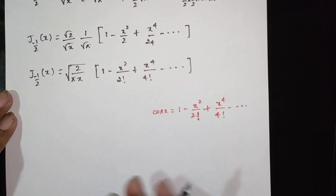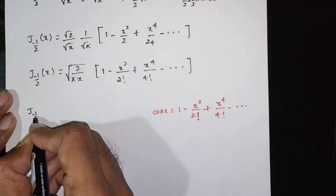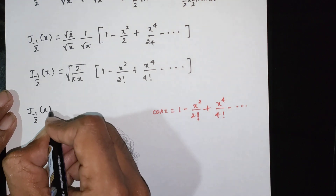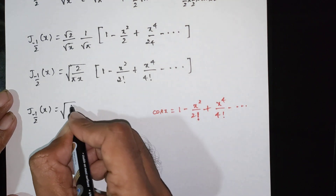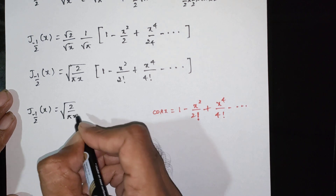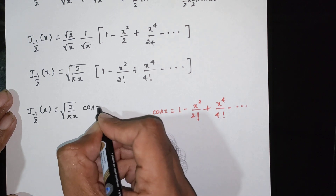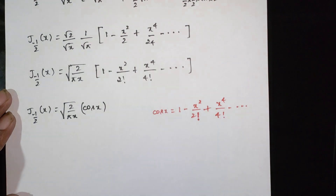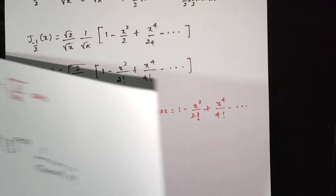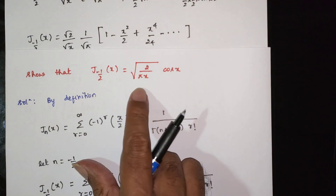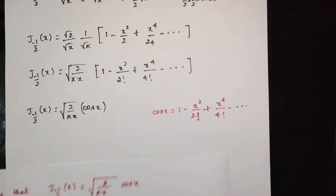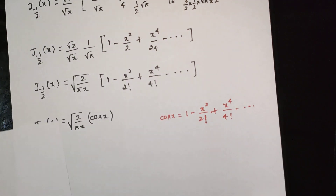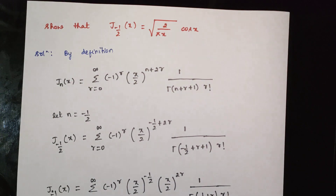Therefore J₋₁/₂(x) is equal to √(2/πx) · cos(x). This is the required result — that J₋₁/₂(x) equals √(2/πx) · cos(x), which is what we set out to show.